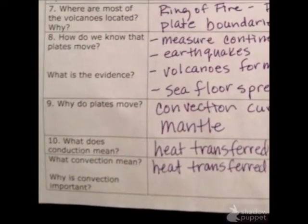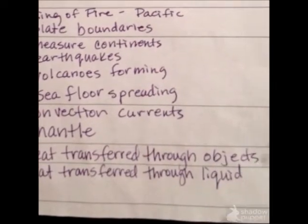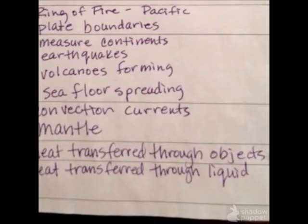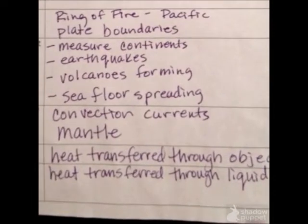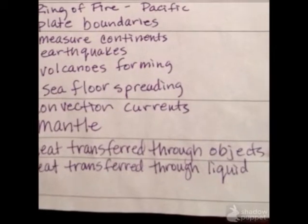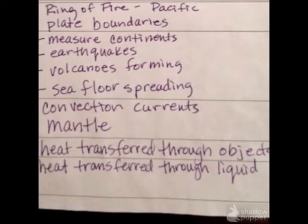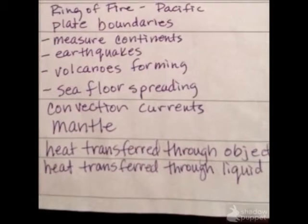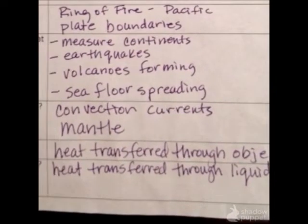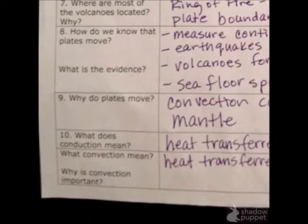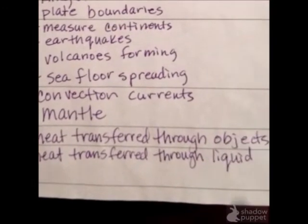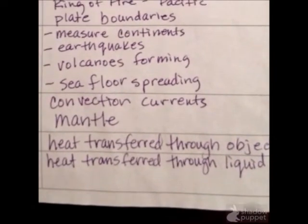Number ten: what does conduction mean? Conduction is when heat is transferred through objects. Like if you're cooking in a metal pan, you don't want to touch the metal handle — you want to use a pot holder because the heat is transferring through the metal. Number eleven: what does convection mean? Convection is heat transferred through liquid movement. That's what we have in the mantle — that hot molten lava.